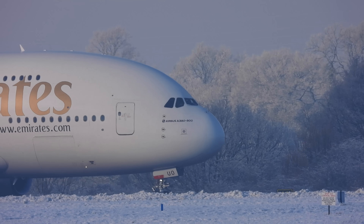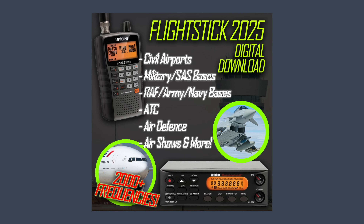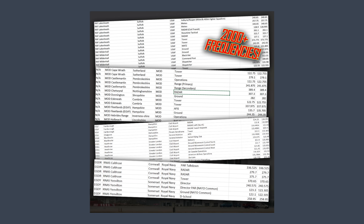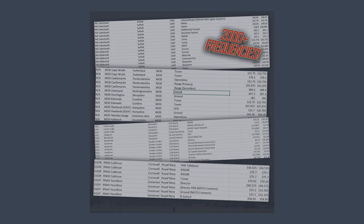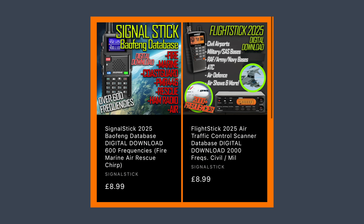If you like these more technical videos, let me know in the comments. My friend Chris produces a great database of all UK air traffic control frequencies — from major airports, military such as the RAF, Army and Navy, the Ministry of Defence, SAS sites, general aviation airfields, gliders, offshore rigs, and everything else you can think of. It's a great tool for your radio if you're near an airport, at an air show, or out with a scanner. There are over 2,000 frequencies for the UK. I'll put a link to a non-affiliate digital download below.